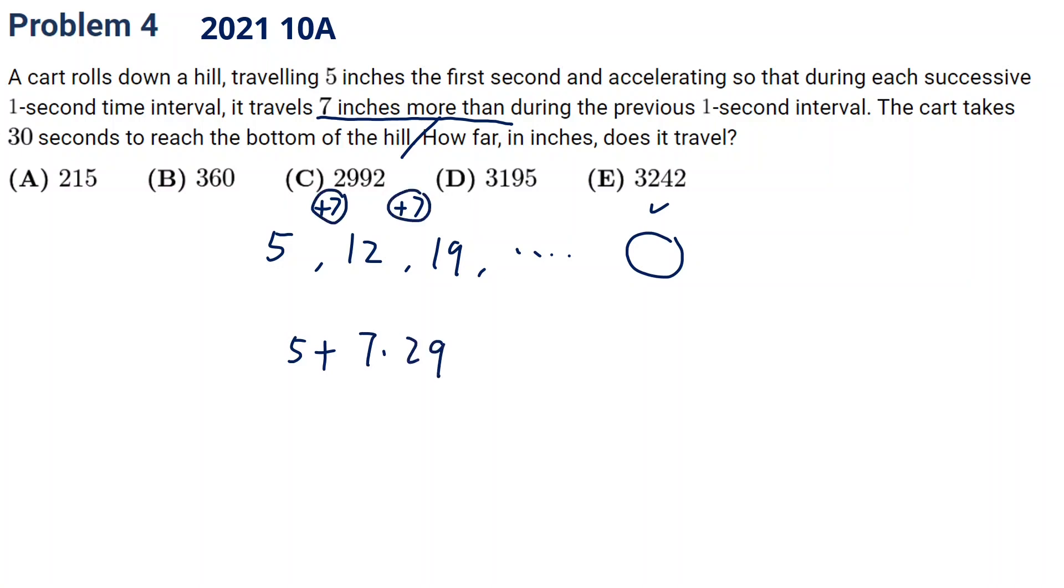Because from the first to the last, although there are 30 terms, there are only 29 differences. So this will give us 203 plus 5, 208. And now we can calculate the sum.